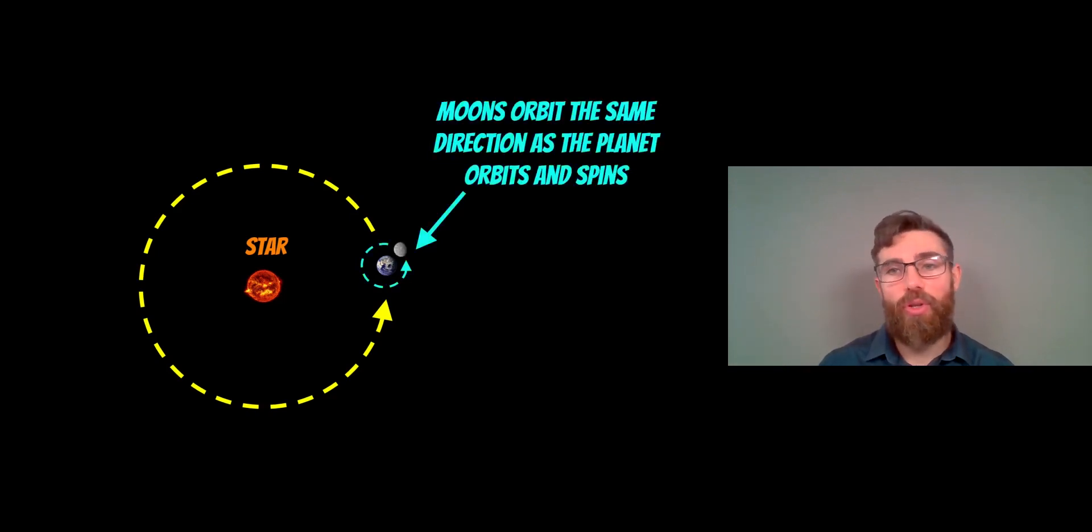The same is also true for moons. If that planet has moons, if those moons formed with the planet around the star at the same time, they would have orbits in the same direction that the planet would orbit the star. And the moon would also rotate in the same direction as well. So everything is doing their rotations and orbits in the same direction, the same plane.